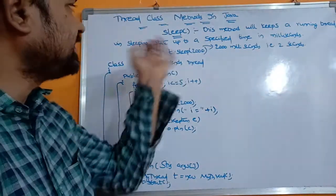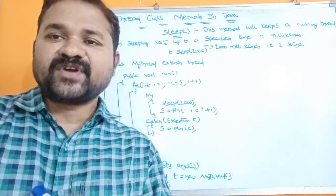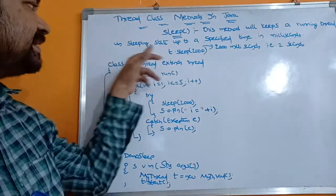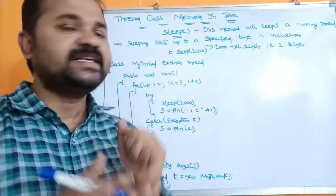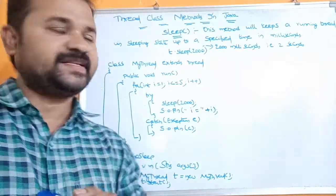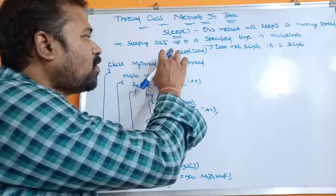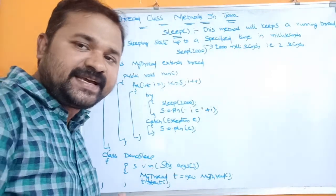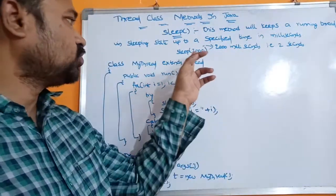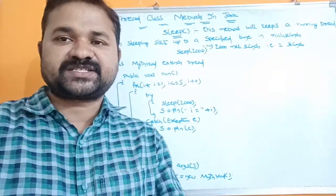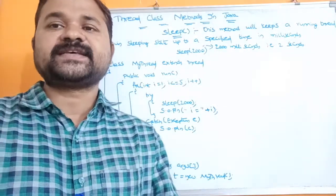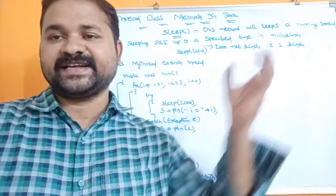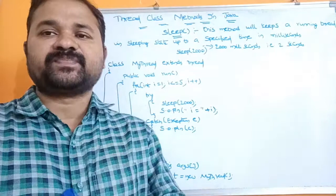Now let's see the sleep method in Java. The advantage of this method is that it keeps a running thread in a sleeping state for a specified time in milliseconds. For example, sleep(2000) — here 2000 milliseconds equals two seconds — so for two seconds the thread will be in a suspended state, and thread execution will be resumed after those two seconds.